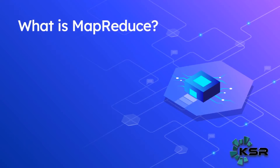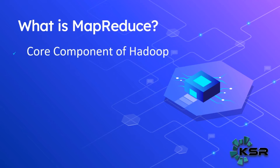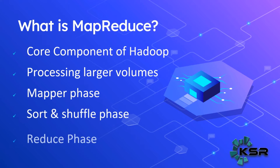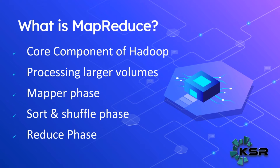Next, coming to MapReduce. MapReduce (MR) is a core component of Hadoop which is used for processing large volumes of data. As the name suggests, it has a mapper phase and a reducer phase. In between it has sort and shuffle phases. If you give a job as input to MapReduce, first it will divide the tasks into input splits.